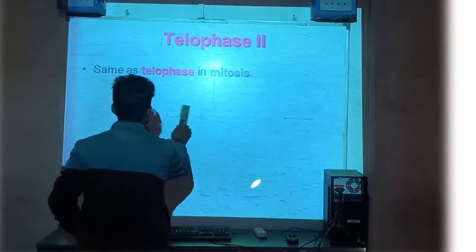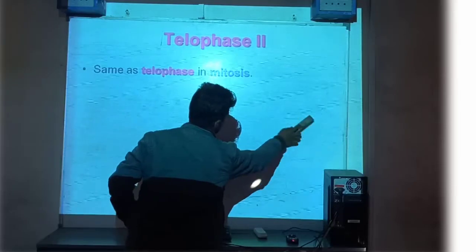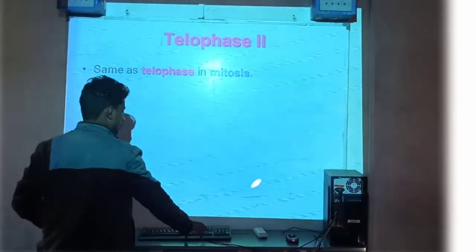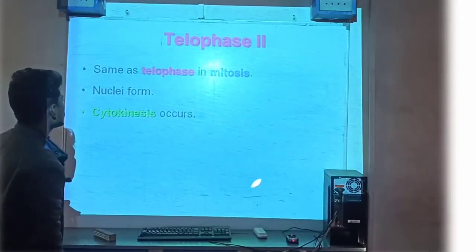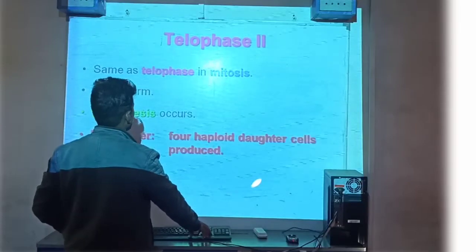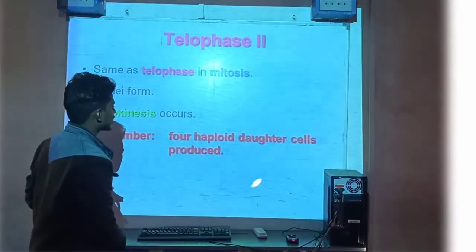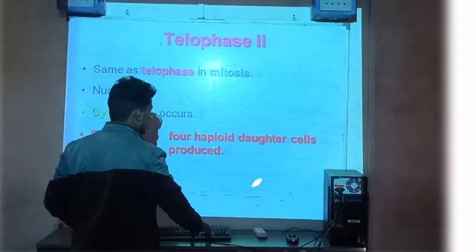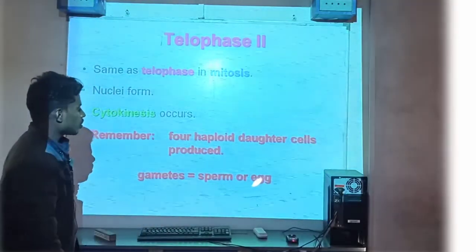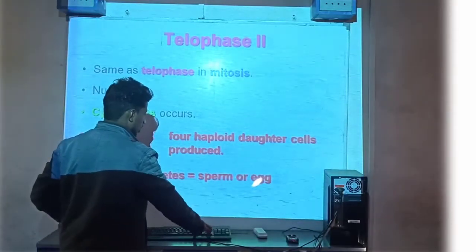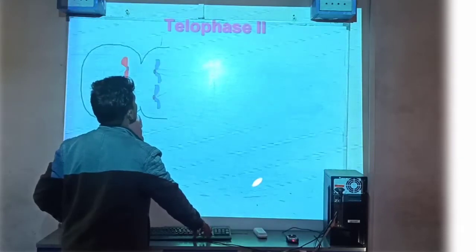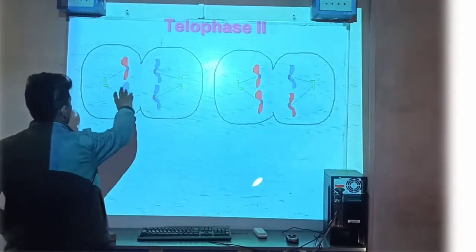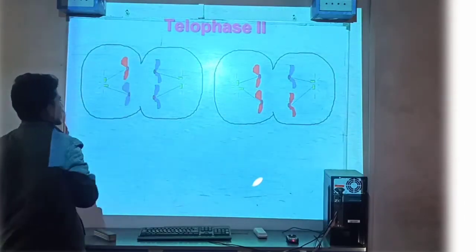Mitosis process आप देख सकते हैं। Meiosis first, first, first — remember: मिलते हैं। Mitosis में gamete = sperm। Telophase second की process में sister chromatids separate होकर crack होते हैं।